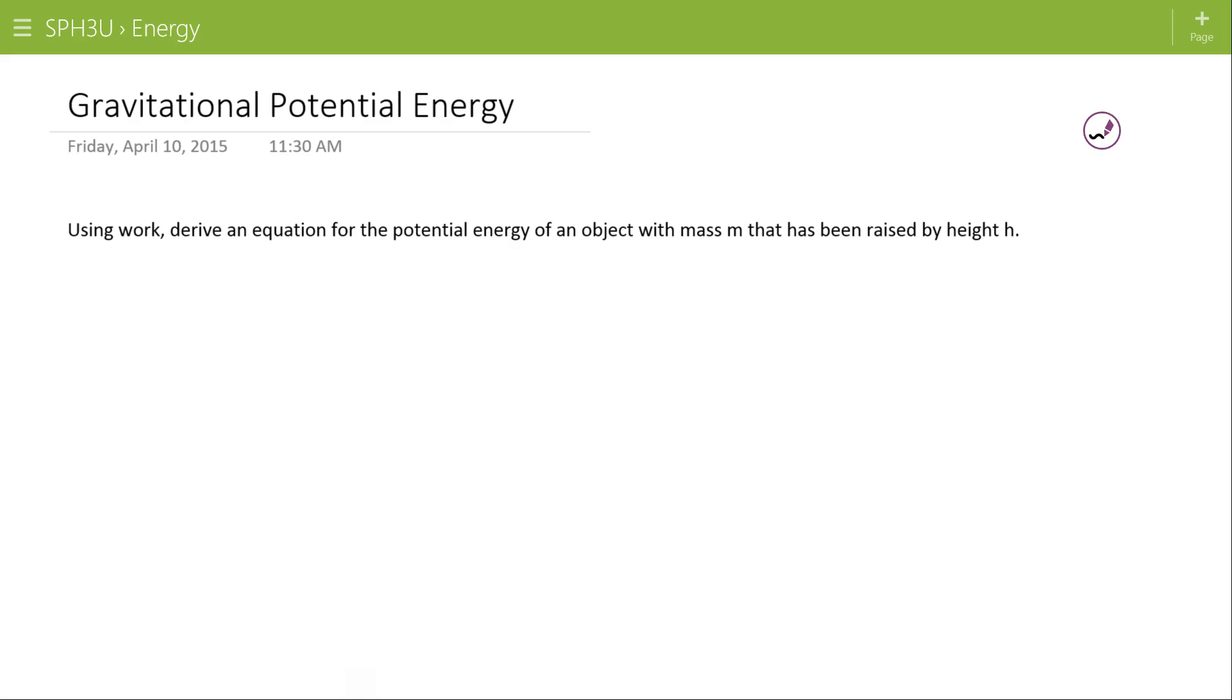Okay, now we're going to look at the derivation of gravitational potential energy. Again, we're going to use the concept of work being the amount of energy that's put into the object. But this time, unlike the last video, instead of viewing that work being put into speeding up the object or acceleration, this time we're going to put that work into raising the object by some unknown height.